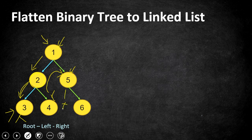So 5 comes next — 5 doesn't have any left children — and then 6 is the last node we visit. The pre-order traversal of this binary tree is: 1, 2, 3, 4, 5, 6.